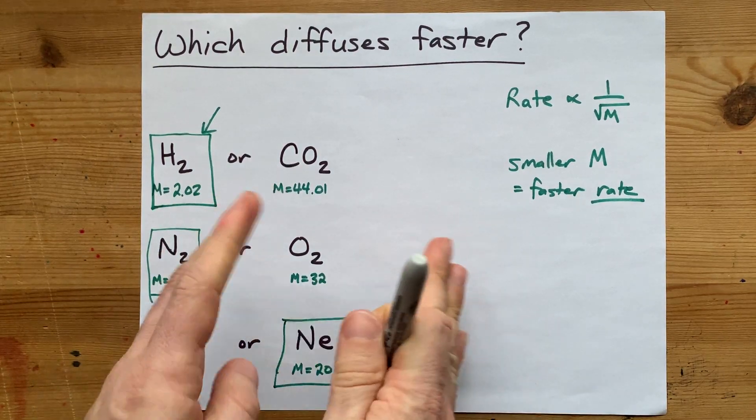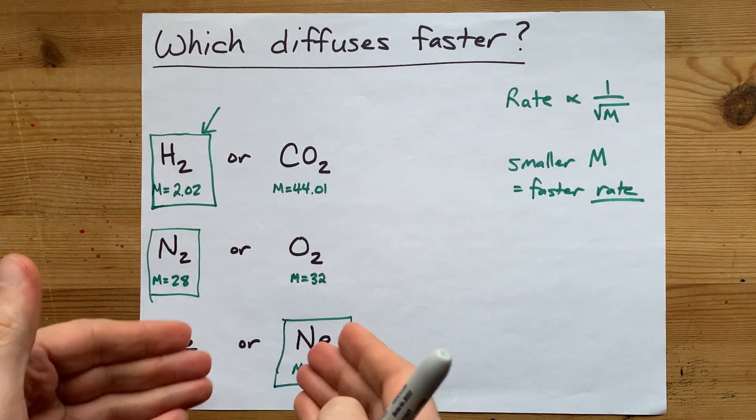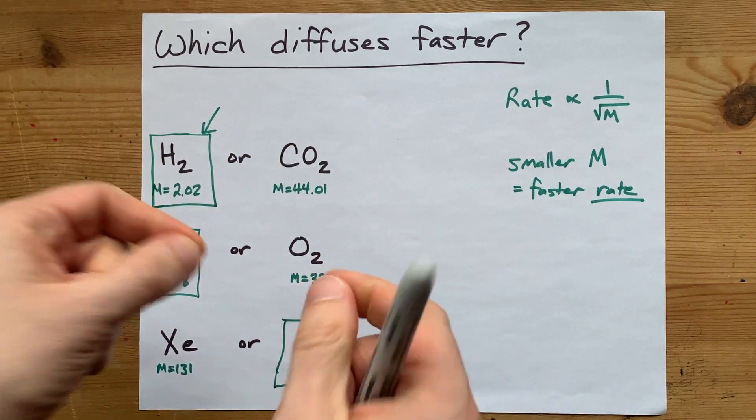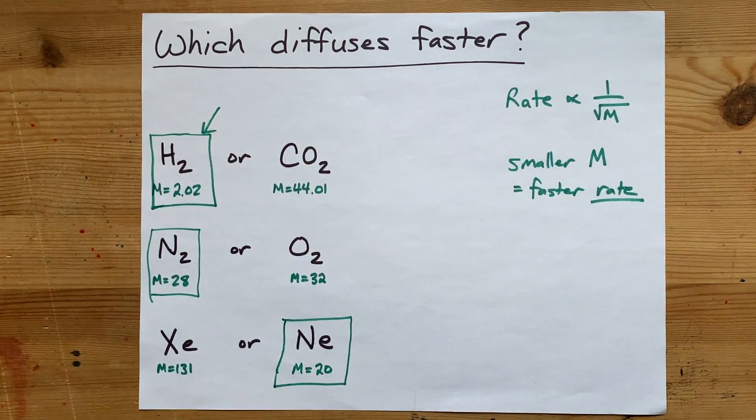It is as easy as figuring out the molar mass or capital M for each of the particles. The smaller one diffuses faster. The end. Thanks for being with me and best of luck.